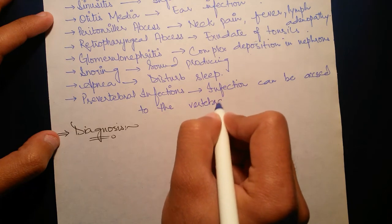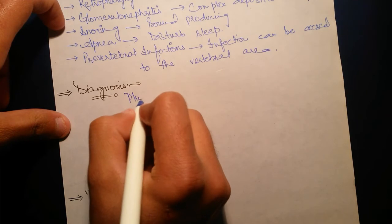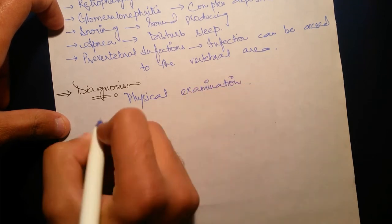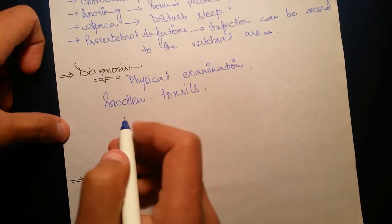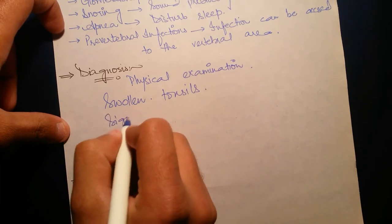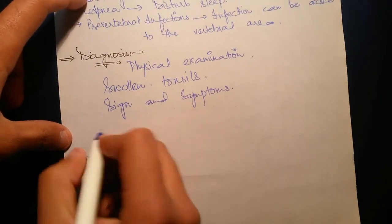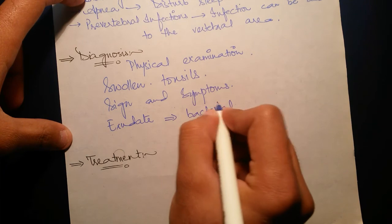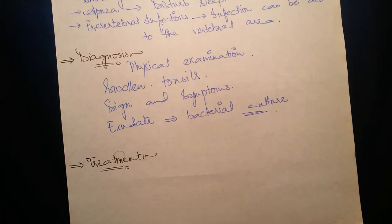Now coming towards the diagnosis. Diagnosis can be based on the physical examination of the lymph nodes or the tonsils. If they are swollen up, it means that the infection is present. Secondly, physical signs and symptoms like fever, cough, and other symptoms. We take the exudate of tonsils and check it for bacteria. Bacterial culture is done and the bacteria or any other infectious material is checked out.